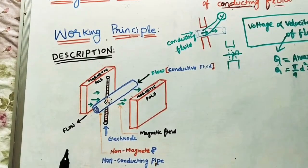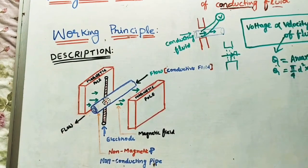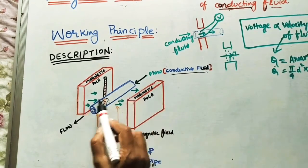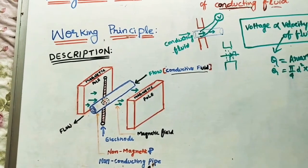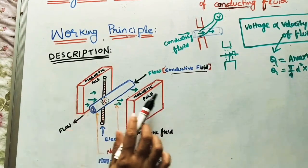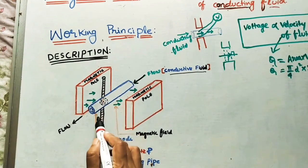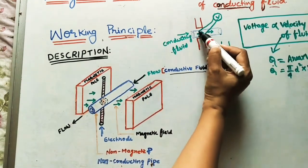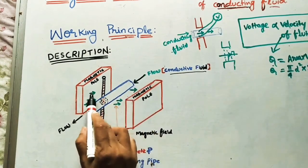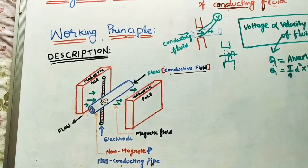Let us take the description of this magnetic flow meter. There are two magnetic poles — two magnets. The conducting fluid is supplied through a non-conducting pipe. The magnetic field is horizontal, and the flow is perpendicular to it. Two terminals or electrodes are connected to the pipe and to a voltmeter to measure the generated voltage. These arrows show the direction of the magnetic field — the entire space between the two magnets is the magnetic field. These are the main parts of the magnetic flow meter.